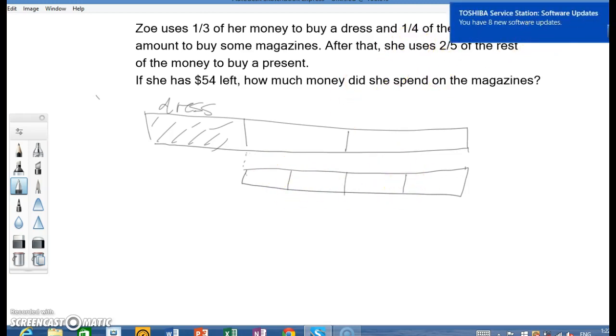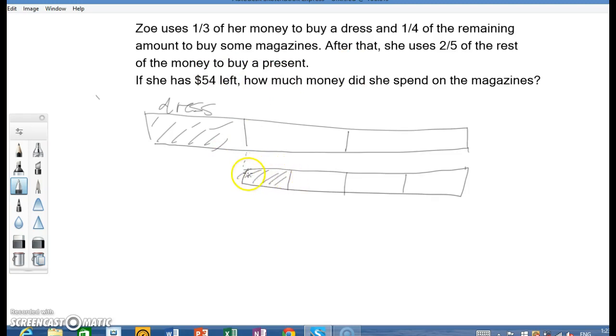And, this one quarter - one quarter of the remaining amount to buy some magazines. So, this one here is what we want to find, the magazines. How much we spend on the magazines.